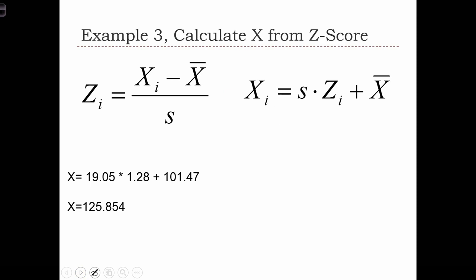Now we need to calculate x from the z-score. If z equals (x minus x-bar) over s, then we can solve for x and find that x equals s times z plus x-bar.